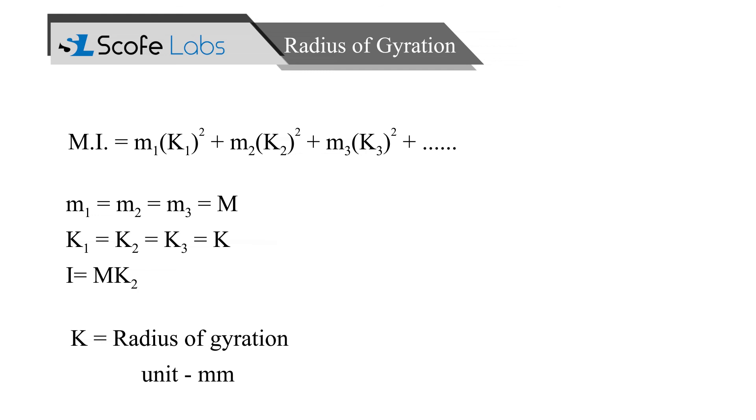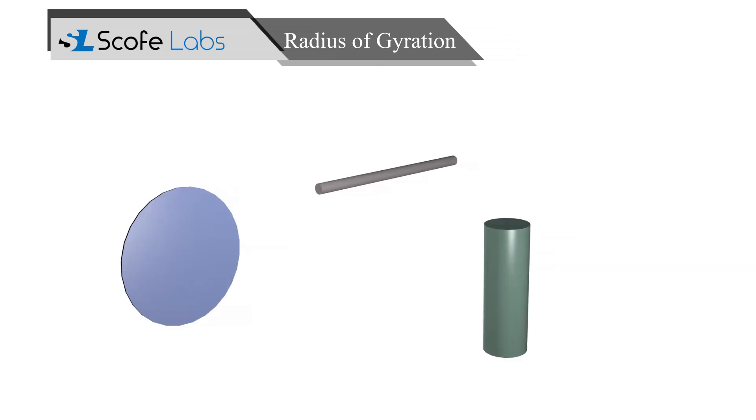And it is measured in millimeters. By studying radius of gyration, we can calculate moment of inertia for variety of shapes such as disc, rod, solid cylinder.